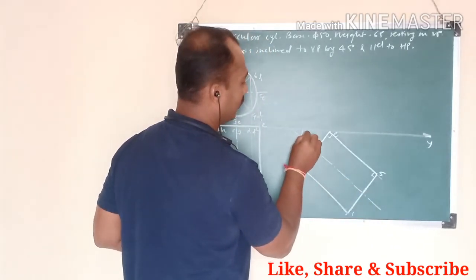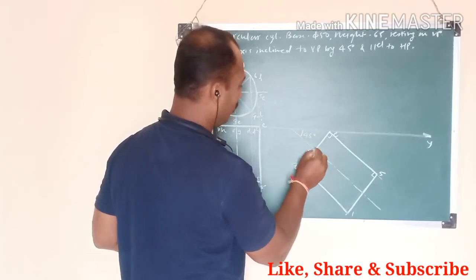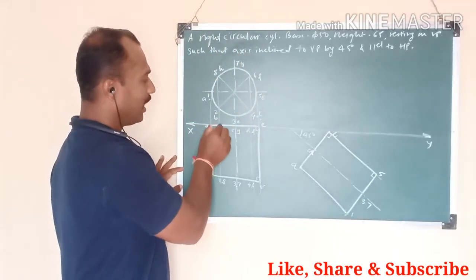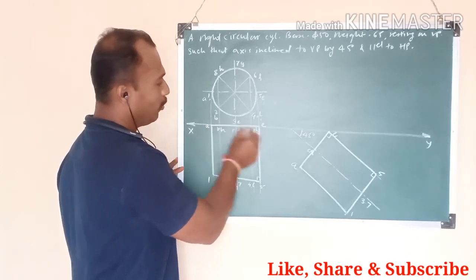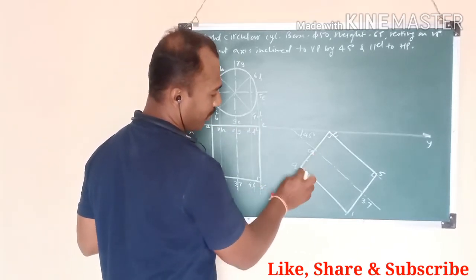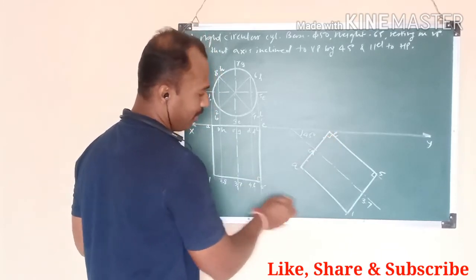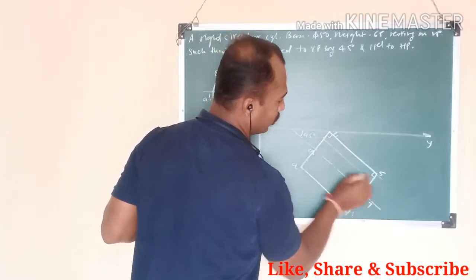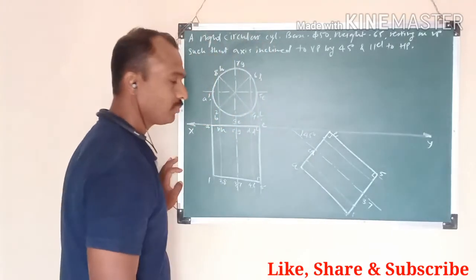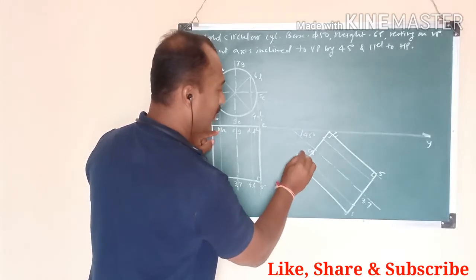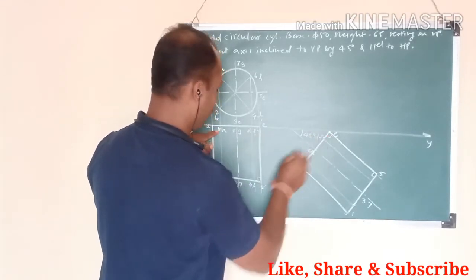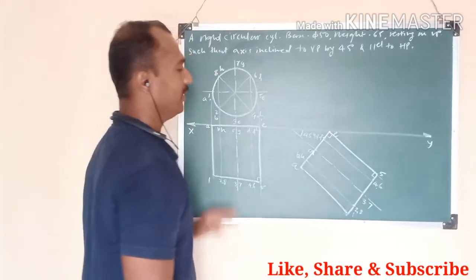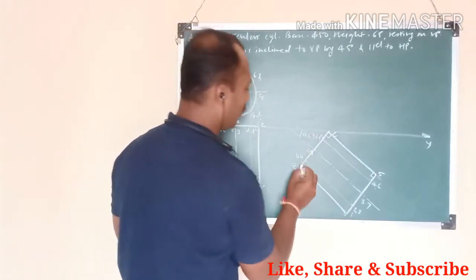Take A to BH distance in compass and plot it from both A and E. Plot points B, C, and others accordingly. Remember the intermediate generators should be in thin lines. Assign point names: A, B, H; then D and F; then 2 and 8; then 4 and 6. Project all these points to the front view.